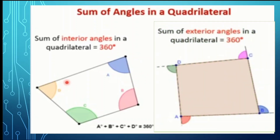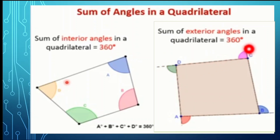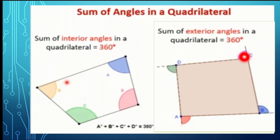The same thing when we're going to talk about the exterior angles of a quadrilateral — you will still get 360 degrees in measure. So we have an exterior angle of our quadrilateral, and the same applies: the measure of angle A plus the measure of angle B plus the measure of angle C plus the measure of angle D is equal to 360 degrees.